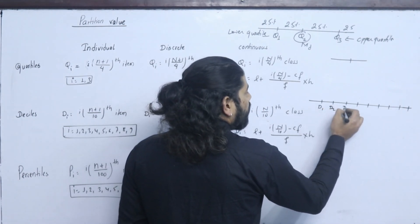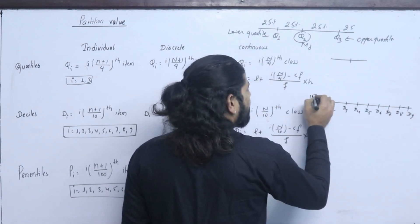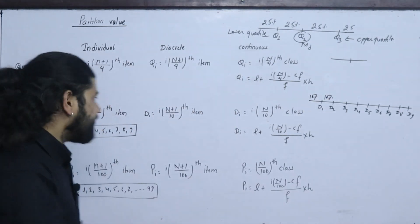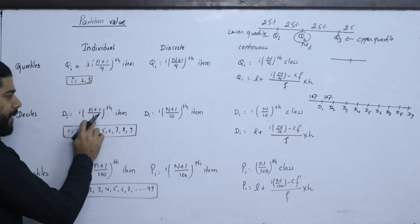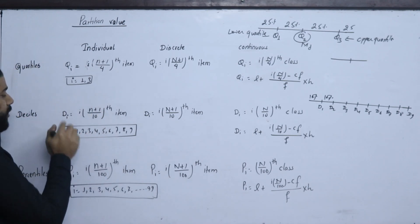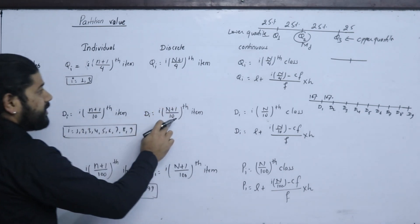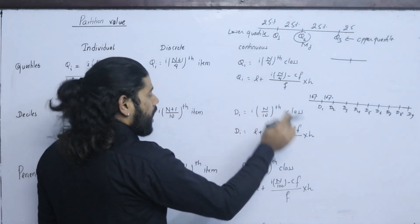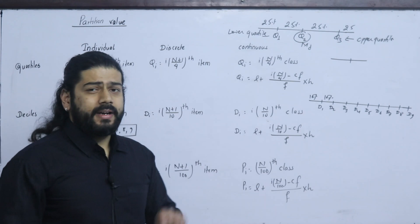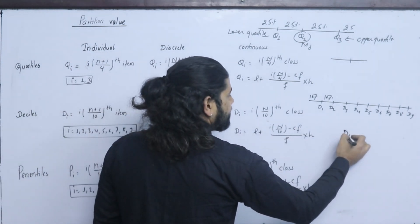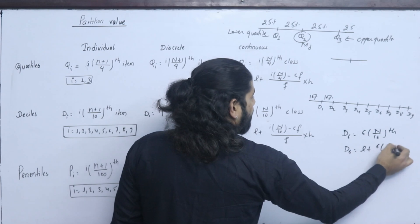For Deciles, D1 through D9 divide the data into 10 equal parts, where D5 equals the median. For the individual series: D_i = i(n+1)/10. For continuous series: D_i = L + (i·n/10 − CF) / F × H. For example, D6 uses 6n/10, so D6 = L + (6n/10 − CF) / F × H.